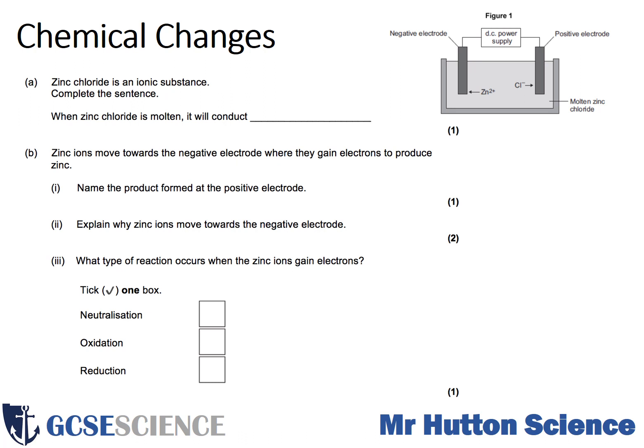The next question is about electrolysis — a topic area that many of you will find difficult. It starts by saying zinc chloride is an ionic substance, so it's made of ions: a zinc ion and a chloride ion. The zinc ion is a metal ion, so it will always be positive — metals are always positive ions.